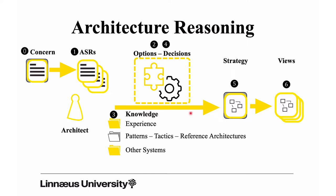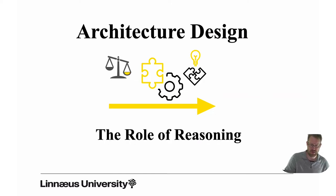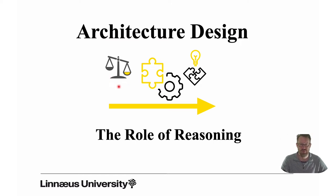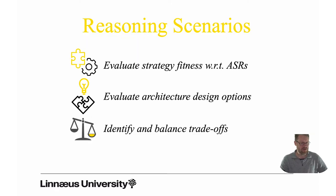Looking at the role of reasoning, you have three very different roles. One is to identify and rank the options. The second is to put the options into a strategy that meets the ASRs. Then you also have trade-offs, where you have to balance ASRs and concerns to come up with something that is good enough.